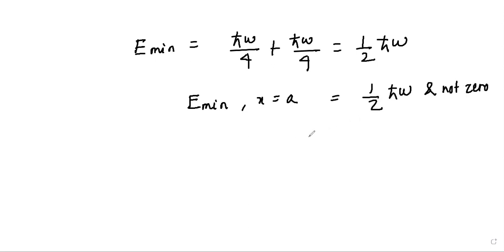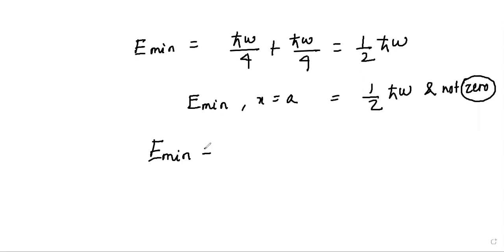So in the ground state at x = a, the minimum energy is found to be (1/2)ℏω — not zero. As per classical physics, the ground state energy of a harmonic oscillator is zero, whereas quantum mechanics using Heisenberg's uncertainty principle shows the ground state energy is actually (1/2)ℏω.